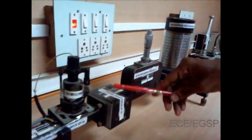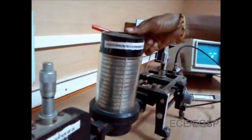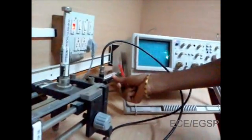This is Klystron mount, isolator section, variable attenuator, frequency meter, slotted section, and detector mount.